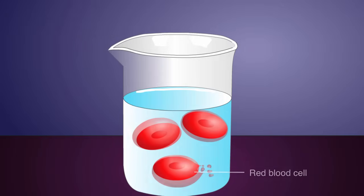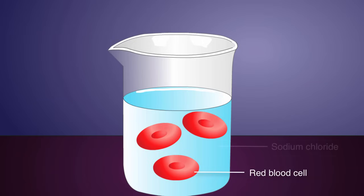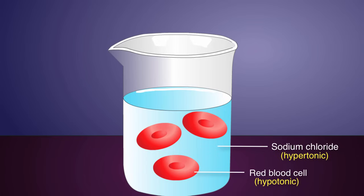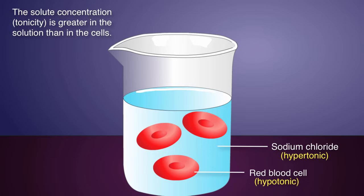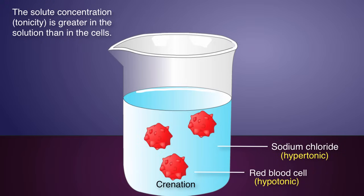Now let's place the red blood cells in a beaker containing a solution of salt, such as sodium chloride. Since the contents of the beaker are hypertonic in relation to the interior of the cells, the water within the cells will diffuse across the membrane and into the contents of the beaker. This causes crenation, or shrinking, of the cells.